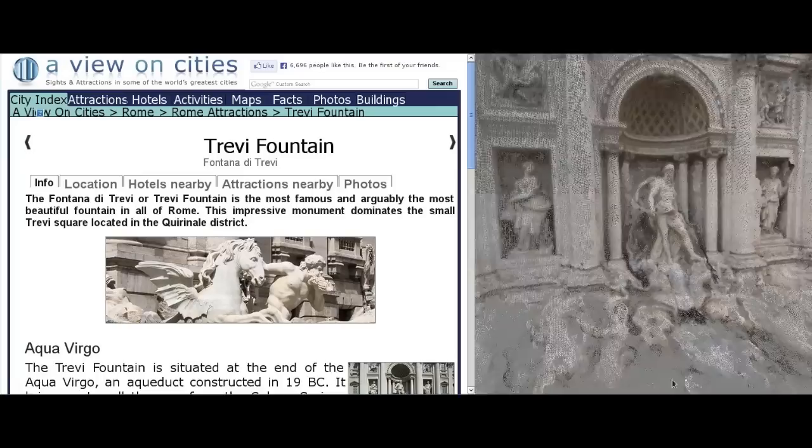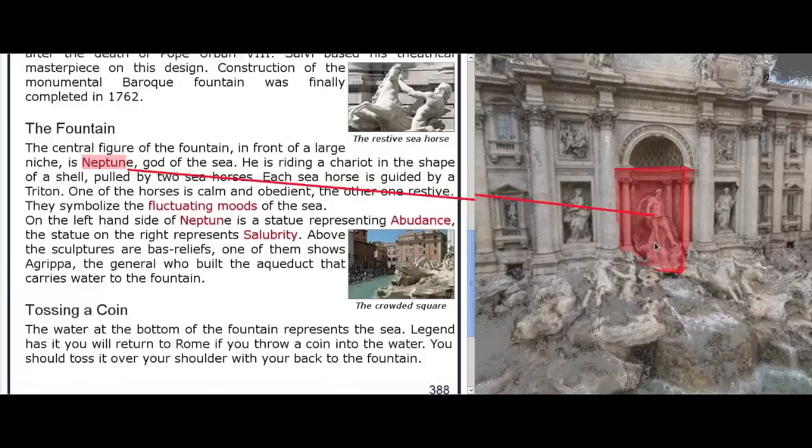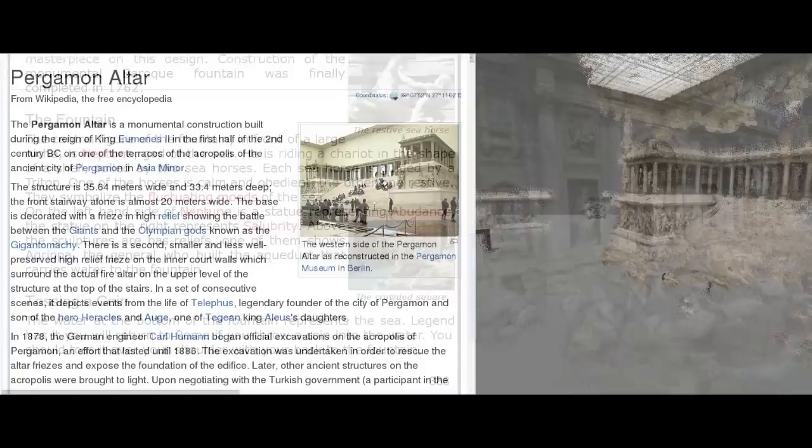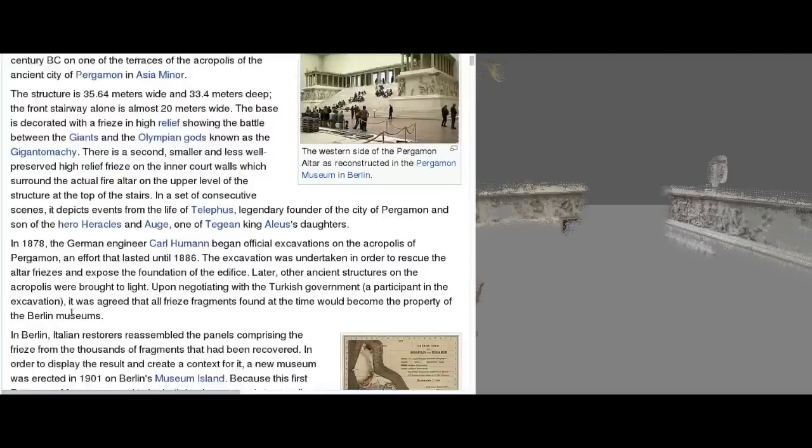We can process any text — it does not have to be Wikipedia. Here we show a view on cities.com, which describes the Trevi Fountain in Rome. Notice that the detected objects are enclosed in automatically generated 3D boxes. We also show the Pergamon Museum in Berlin, which displays the remains of the Greek Pergamon altar.